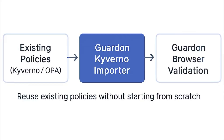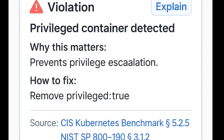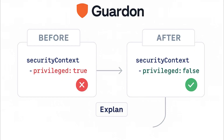If your team already uses Kyverno or Open Policy Agent, Gardon fits right in. Its improved Kyverno importer lets you reuse your existing policies seamlessly, preserving audit and mutation logic so you don't start from scratch. Also, Gardon doesn't just flag problems — it teaches. Every violation now comes with an explain button that links directly to recognized frameworks like CIS Kubernetes benchmarks and NIST SP 800-190. Instead of a vague error message, you can clearly see the reasoning, why it matters, and how to fix it properly. And when you're ready to fix it, Gardon provides before and after YAML previews, helping you visualize the corrections before applying them. So it's not just validation — it's instant, in-context guidance.